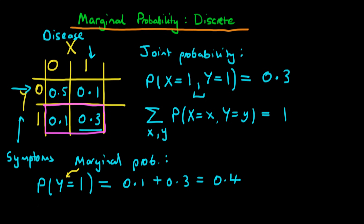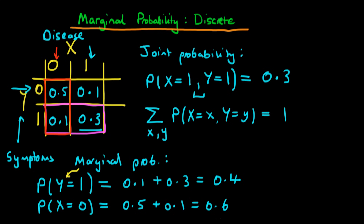Similarly, we could find the probability that an individual does not have the disease — P(X=0). We pick out the relevant column, highlighted here in red, covering all cases where an individual doesn't have the disease. We sum 0.5 plus 0.1, giving a marginal probability of 0.6.